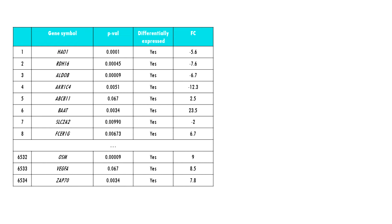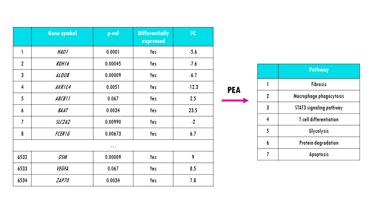A common approach is pathway enrichment analysis. Its name gives you a clue of what it does — it basically summarizes the long gene list to a shorter and more easily interpretable list of pathways. So instead of having a list of 2000 genes, you might get a list of 50 or 60 biological pathways, and you can then check which genes are behind these pathways.